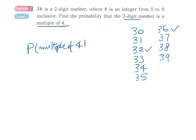We have a total of 10 numbers—10 possible outcomes—so 10 will be our denominator. We have only two favorable outcomes, 32 and 36. So the answer will be 2/10, which equals 1/5.